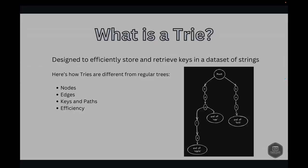So what is a trie? A trie or prefix tree is a specialized tree-like data structure designed to efficiently store and retrieve keys in a dataset of strings. Unlike a traditional tree where each node represents a single value, a trie node represents a part of a key, such as a character in a string.